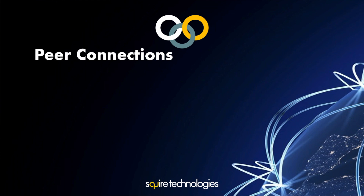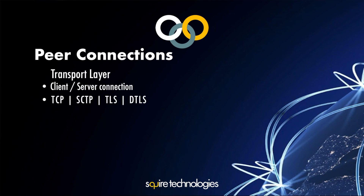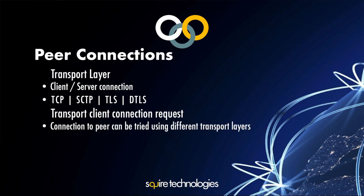Regarding peer connections: the transport layer is a client-server connection using TCP or SCTP, and can also use TLS at the transport layer. The specification states that a client should be able to use TCP or SCTP, but a server or routing agent must support both TCP and SCTP at the same time.